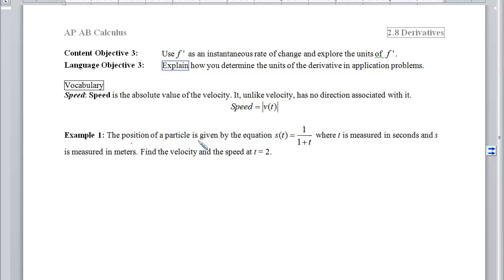With example 1, we're given the position of a particle by this equation s, where t is measured in seconds and s is measured in meters. I want to find both the velocity and the speed at t equals 2.